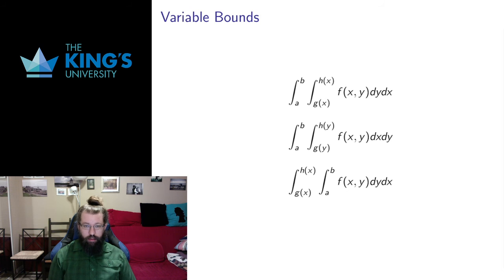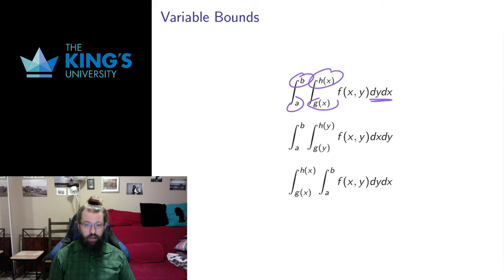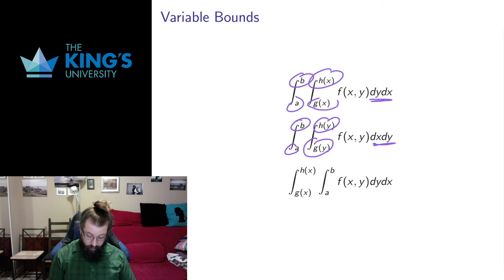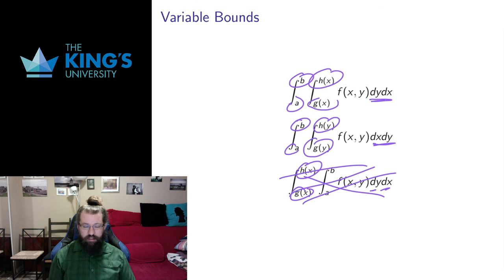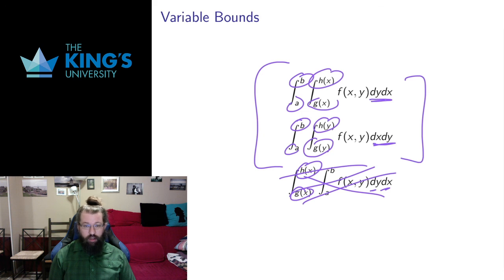Let me be really clear about the order of variable bounds. If the y integral is inside and the x integral is outside, then the y bounds can involve x, but the x bounds on the outside must be constant. If the x integral is inside and y is outside, then the x bounds can involve y, but the y bounds on the outside must be constant. If I tried to set up an integral with y inside and x outside but with bounds that depended on x, this wouldn't make sense — I'd have a variable showing up in bounds outside its own integral, leaving variables unresolved. We must have constant bounds on the outside and variable bounds only inside the integral for the variable being used.